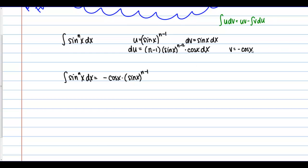Then minus v du, that's going to give me minus a negative, so I'm going to go ahead and write that as plus. We're going to have an integral here. In my du, I have this factor of n minus 1. That's a constant with respect to the integral, so I'm going to go ahead and pull that out front. Then inside my integral, I'm going to have a sine of x to the n minus 2 power times a cosine squared x dx.